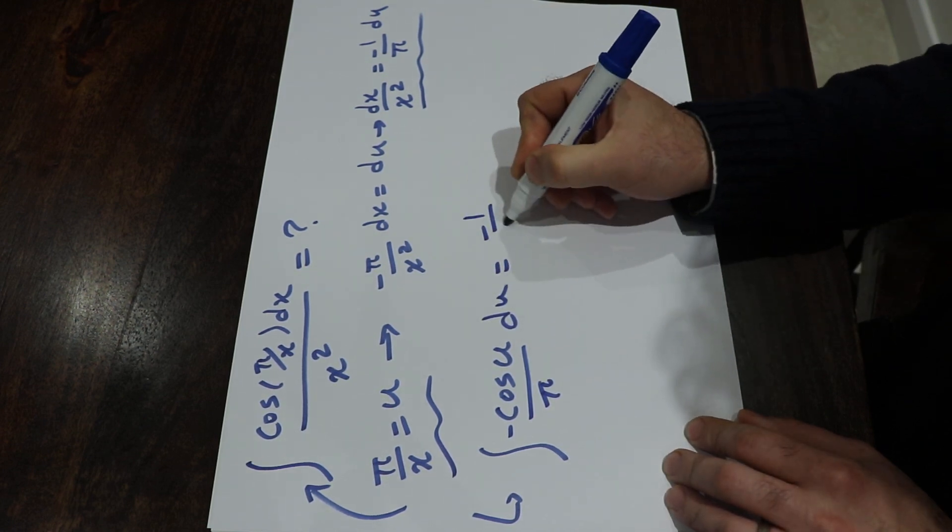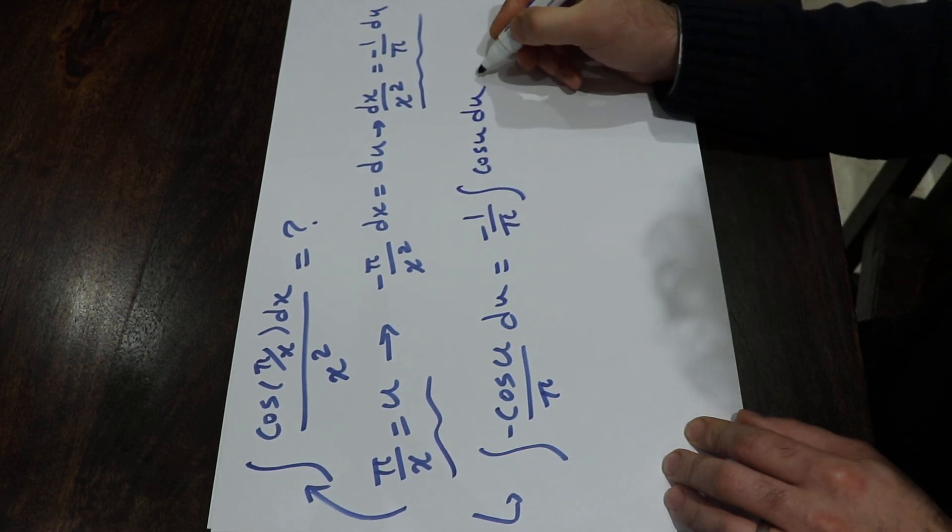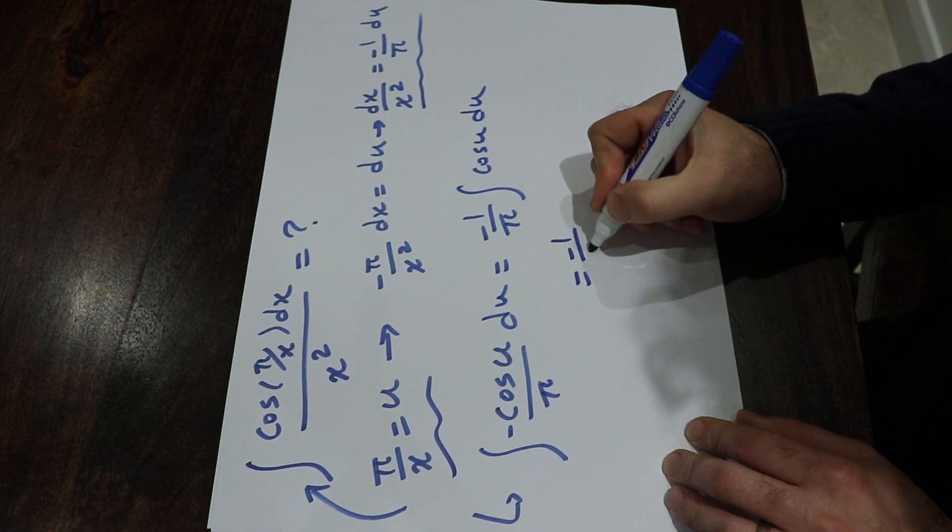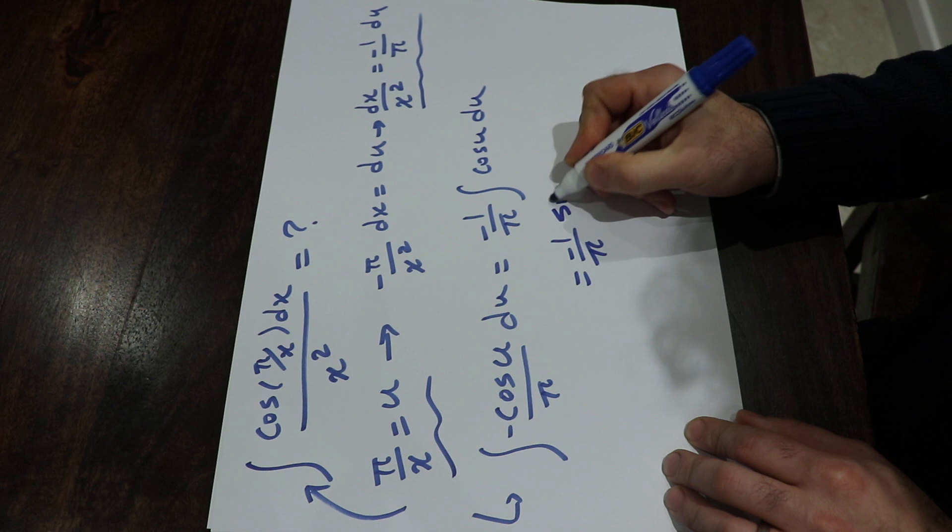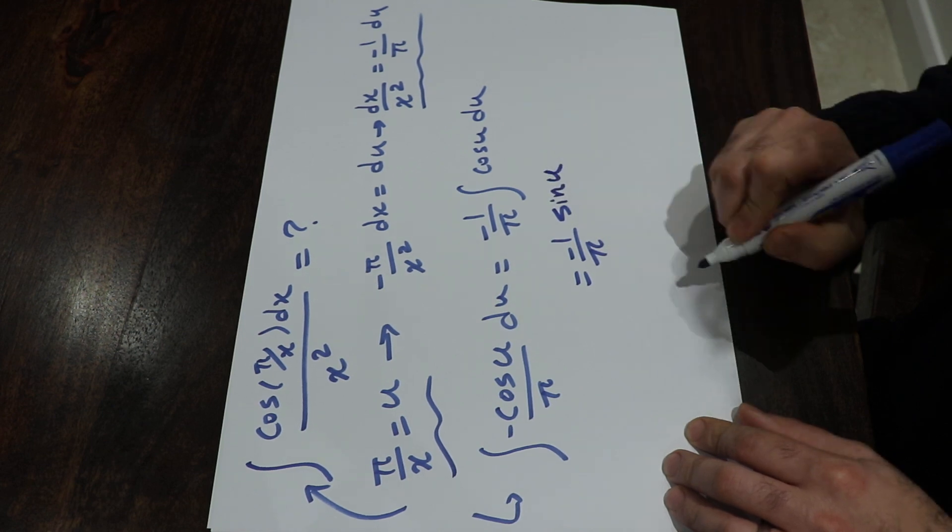And this integral will be equal to minus 1 over pi integral cosine u du, and we know that the integral cosine u du is equal to, from table of integrals, it is equal to sine u.